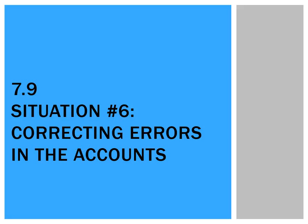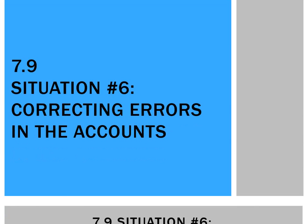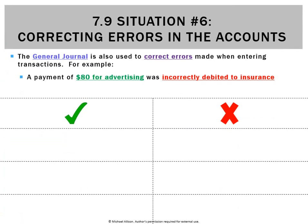The final situation in which we'll need the general journal at this point of the course is situation six: correcting an error in the accounts. This has come up on the exam plenty in past years and there's potentially any number of mistakes that could happen, so let's look at some that we might need to fix. For each mistake we'll put how it should look on the left hand side and what was actually done incorrectly on the right hand side.